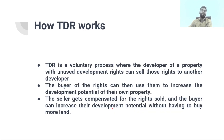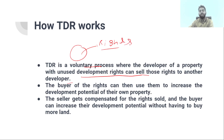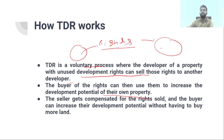How does TDR work? TDR is a voluntary process where the developer of a property with unused development rights can sell those rights to another developer. For example, if a developer had rights to 10% more development, they can give those rights to another property owner. The buyer of those rights can then use them to increase the development potential of their own property. Sellers get compensated for the rights, and buyers can increase their development potential without having to buy more land.